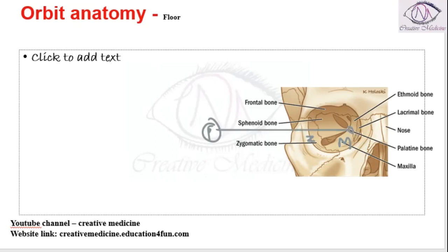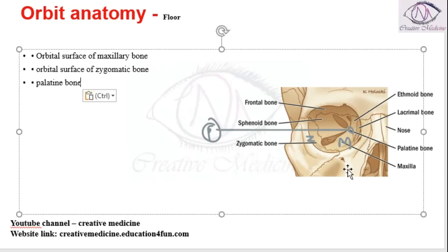All three together form the floor of the orbit. So the floor of the orbit is formed by the orbital surface of the maxilla, orbital surface of the zygomatic bone, and the palatine bone.